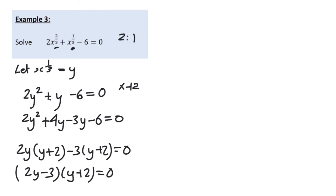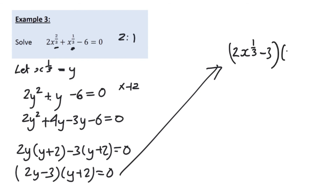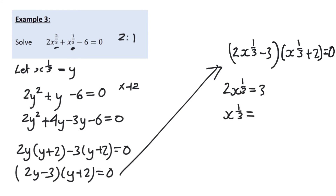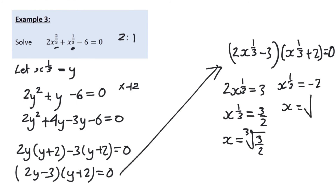Factorising gives (2y minus 3)(y plus 2) equals 0. Now we substitute x to the power of one third back in for y, giving (2x to the power of one third minus 3)(x to the power of one third plus 2) equals 0. Solving: 2x to the power of one third equals 3, so x to the power of one third equals 3 over 2, meaning x equals the cube root of 3 over 2. On the other side, x to the power of one third equals minus 2, so x equals the cube root of minus 2.